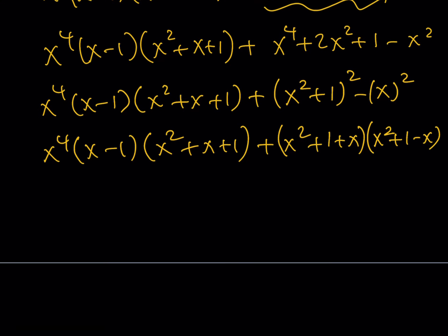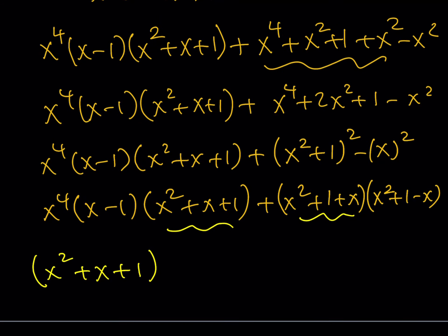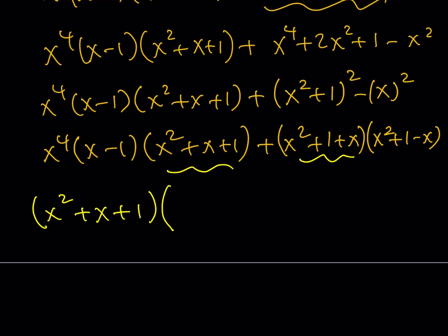We get a nice expression, and x squared plus x plus 1 is the common factor. So I can take out x squared plus x plus 1. That's the critical part — we always have this kind of factor. Then we have here x to the 5th minus x to the 4th, and the second piece is x squared plus 1 minus x. The negative x terms don't cancel out, so we'll just stick with that.